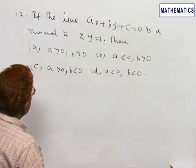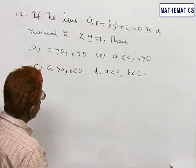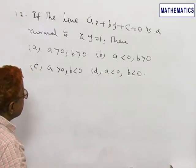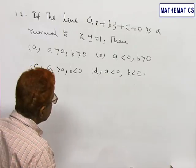Option a: a > 0, b > 0. Option b: a < 0, b > 0. Option c: a > 0, b < 0. Option d: a < 0, b < 0.